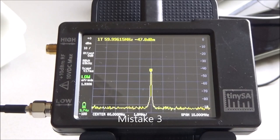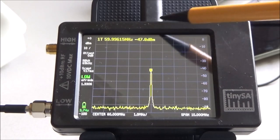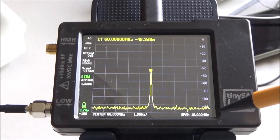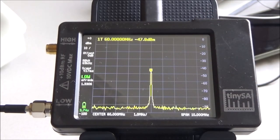In this last example of what can go wrong, we are looking at the measurement of a harmonic of a 20 MHz signal. So we're looking in particular to the third harmonic at 60 MHz. And as you can see, we've used the TinySA in all its default settings and centered it on 60 MHz with a span of 10 MHz. And we see that the strength of the third harmonic is about minus 48 dBm.